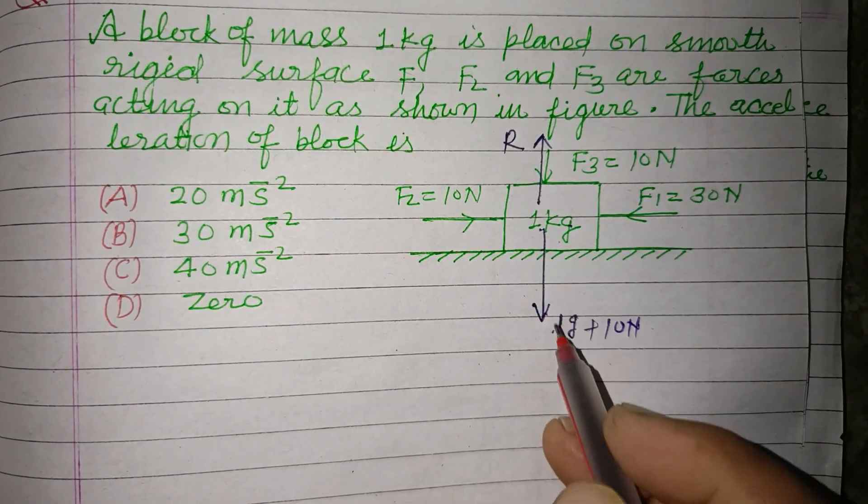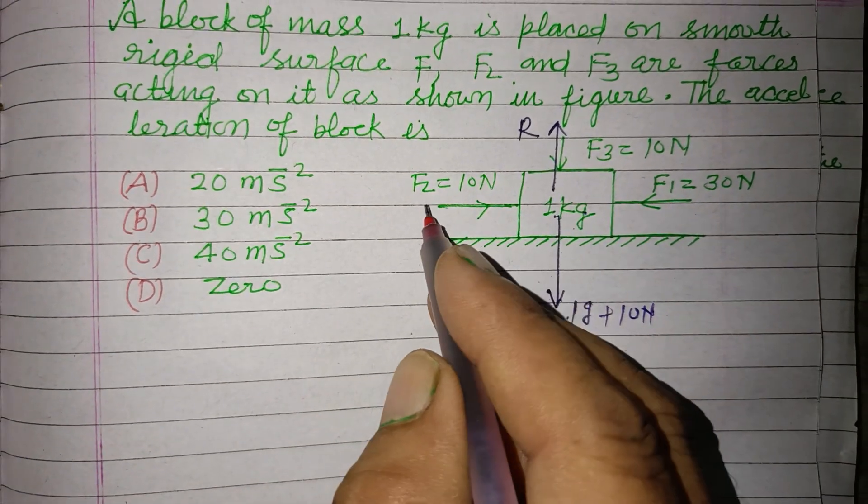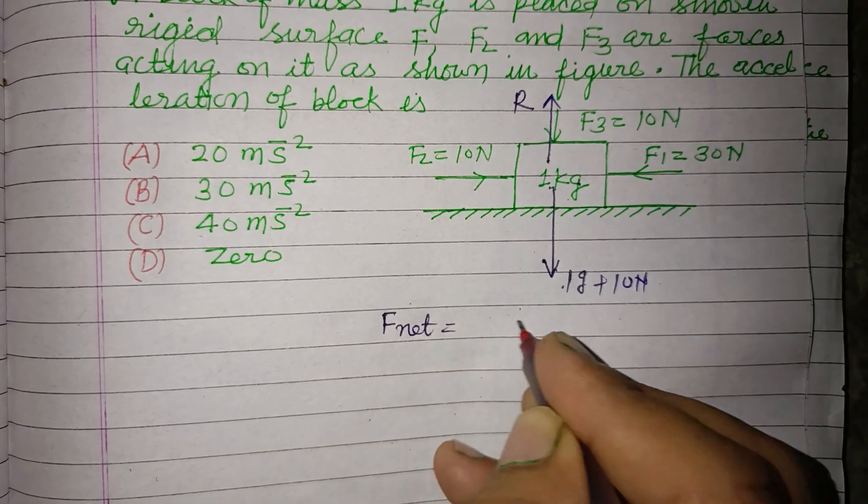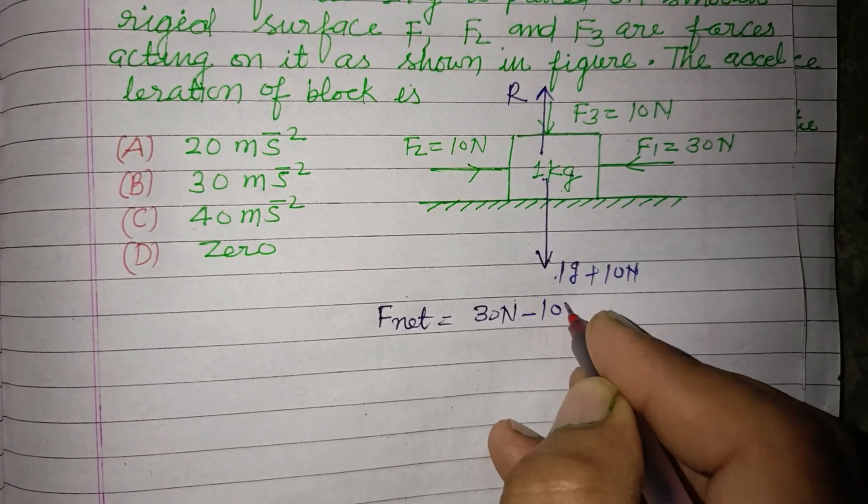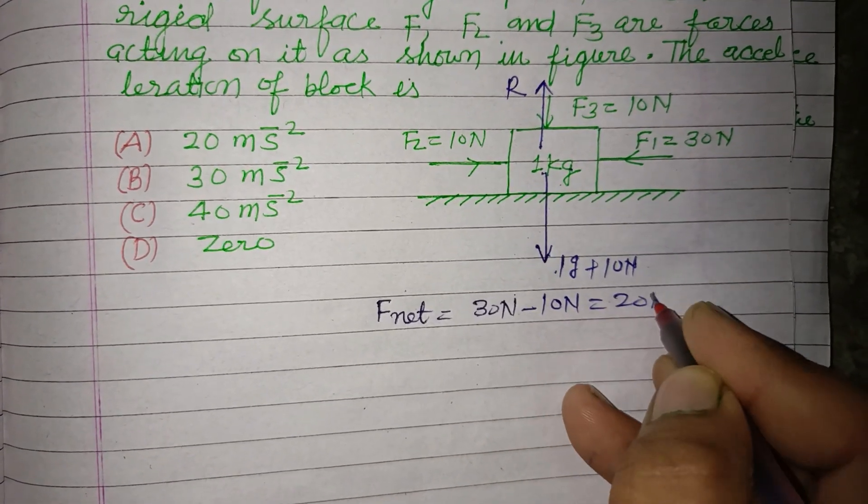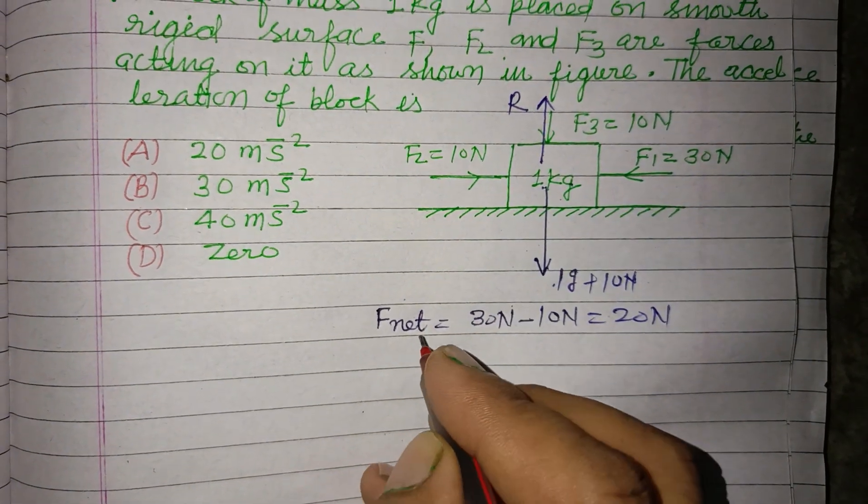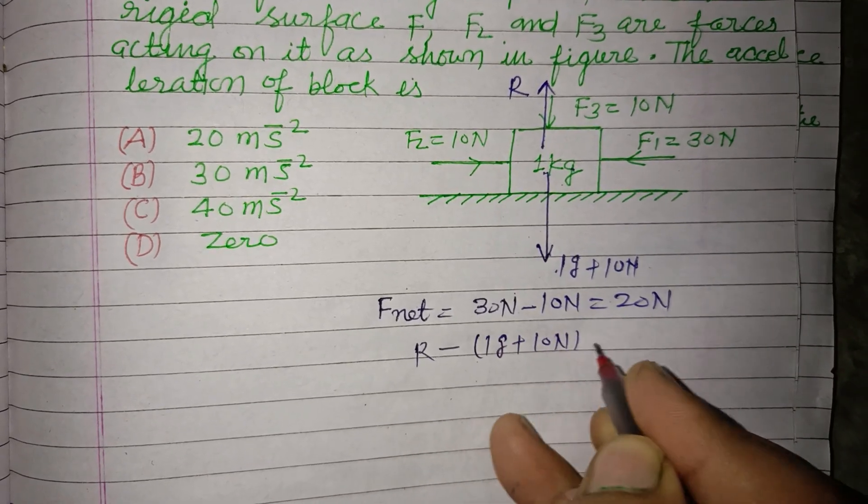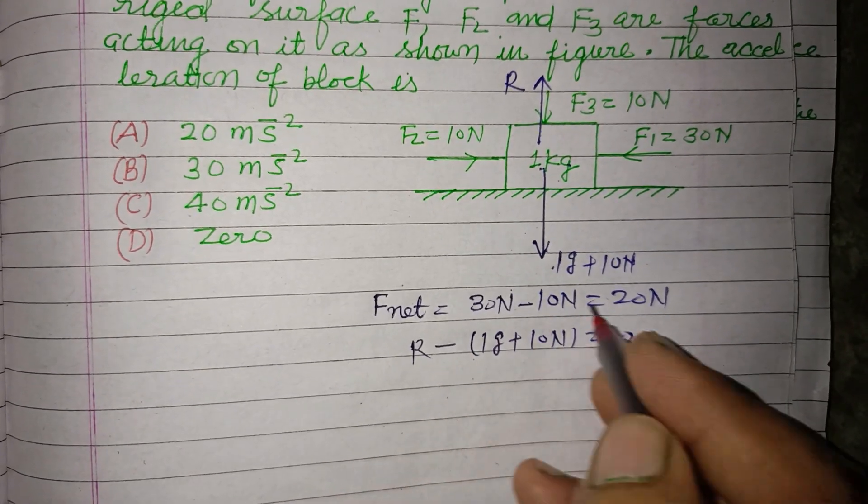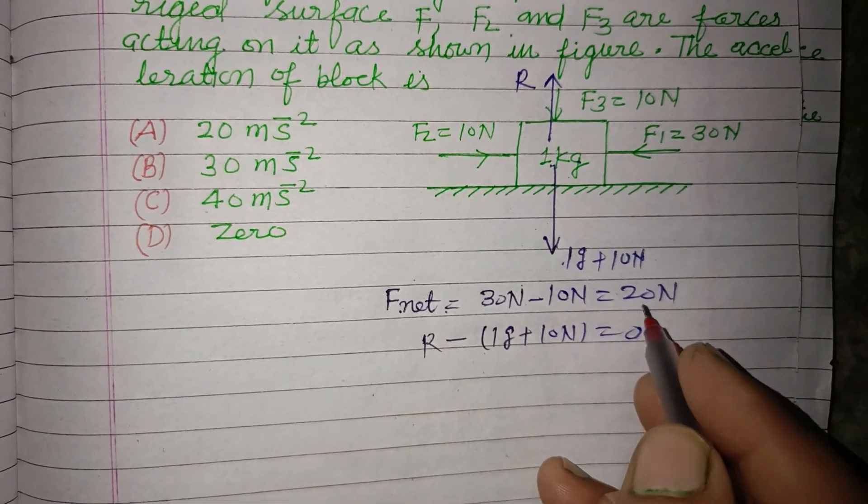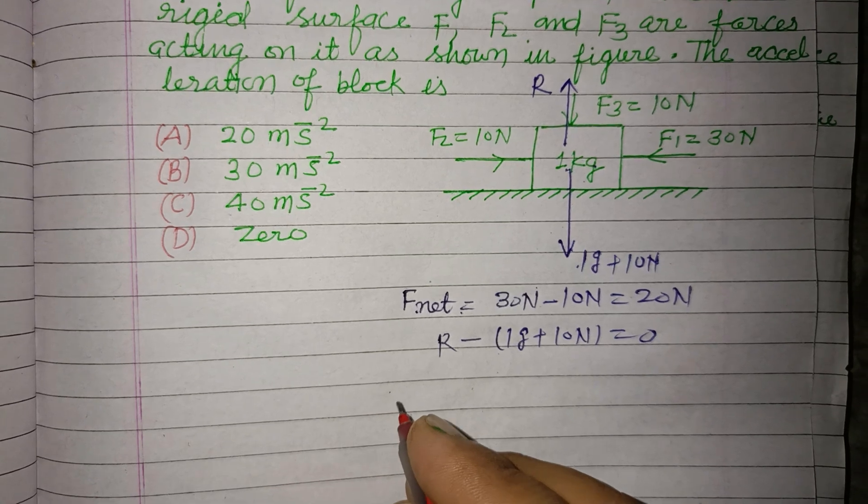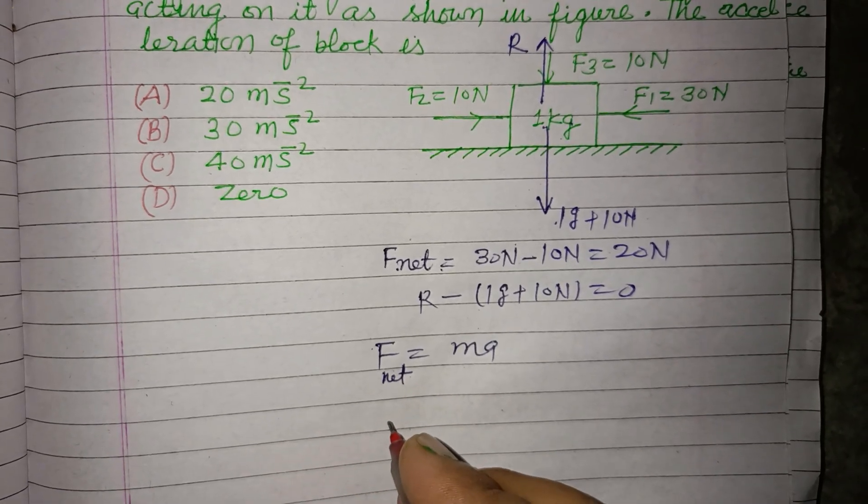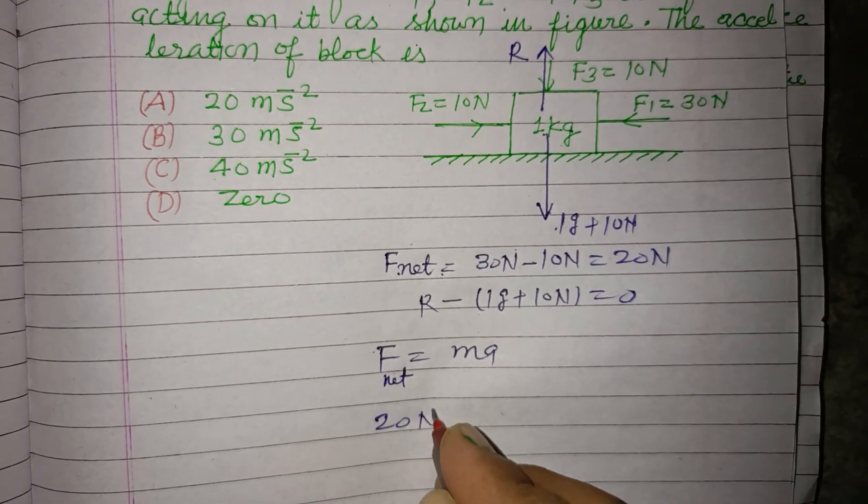In left and right, the net force is F_net equal to 30 Newton minus 10 Newton, that is 20 Newton. And the upward force R minus 1g plus 10 Newton equals 0, so this vertical force is 0. Only the horizontal net force remains. So F equals MA, F_net equals MA, which is 20 Newton.